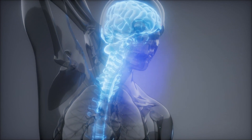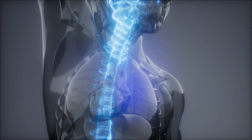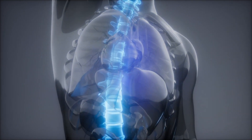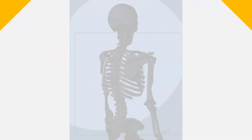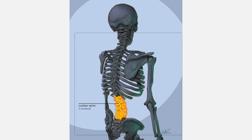The spine is made up of 24 bones called vertebrae. Ligaments and muscles connect these bones together forming the spinal column, which has three main segments. From top to bottom they are the cervical spine, the thoracic spine, and the lumbar spine. Below the lumbar spine is the sacrum, followed by the coccyx, which are made up of vertebrae that fuse together during childhood.